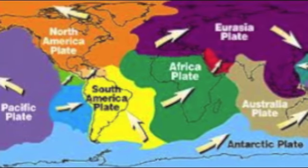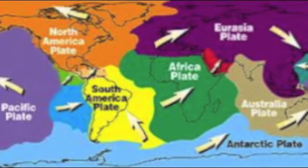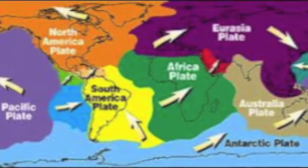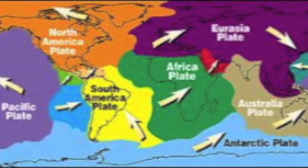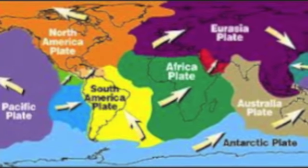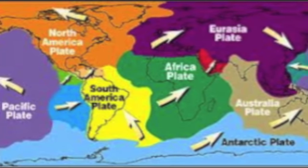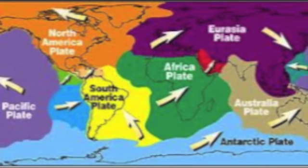Everyone at the time thought the ocean floor was flat. To explain the evidence he found, Hess developed the theory of seafloor spreading. Harry Hess proved Alfred Wegener's theory was right and also gave us the idea of plate tectonics. His idea gave geologists a reason to believe Alfred Wegener. Both their theories give us an explanation of earthquakes and volcanoes.